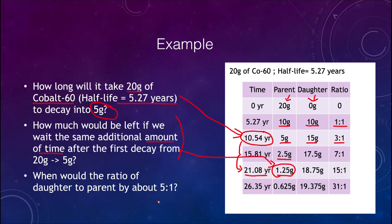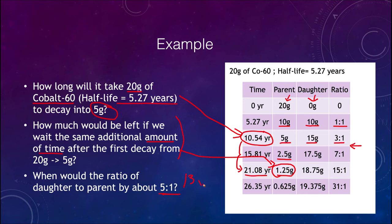Our answer is 1.25 grams. Finally, when would the parent-to-daughter ratio be about 5 to 1? At 5 years it's 1 to 1, after 10 years it's 3 to 1, and after about 15 years it's 7 to 1. So it would be somewhere between roughly 10.5 and 16 years — about 13 years. You can calculate this exactly with logarithms, but estimating from the table is sufficient for this course.